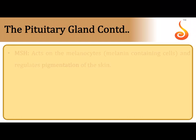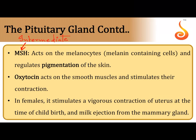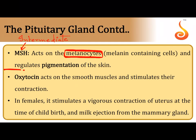The intermediate lobe of the pituitary gland is situated between the anterior and posterior pituitary. It secretes melanocyte stimulating hormone (MSH), which acts on pigment cells in the skin called melanocytes and modifies the pigmentation or coloration of the skin.